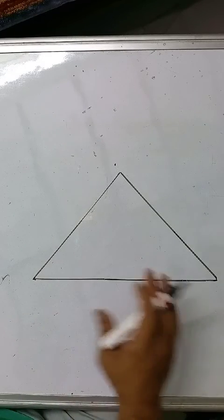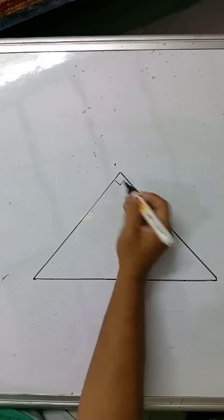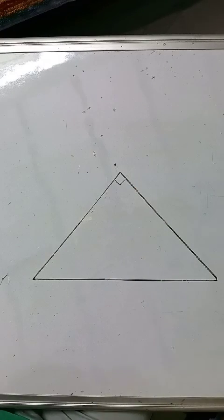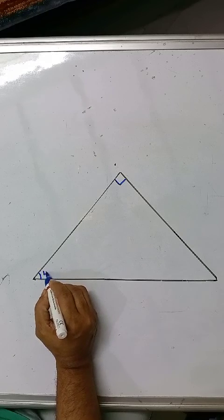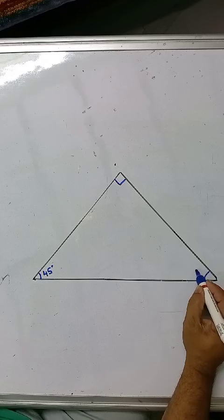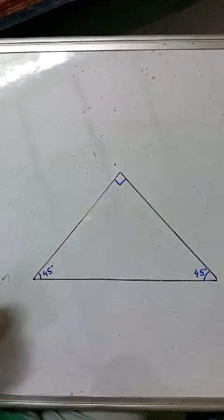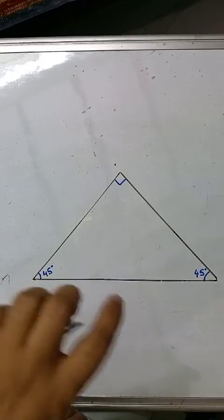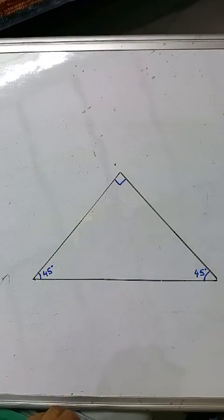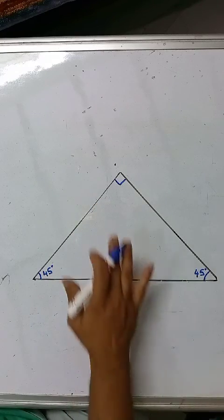This particular diagram that I am going to draw is based on a prism. This angle over here is going to be 90 degrees, this angle over here I am taking as 45 degrees, as well as this angle as 45 degrees. So 45 plus 45 makes 90, plus 90 is 180.